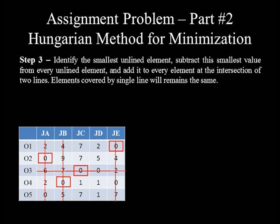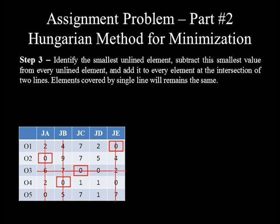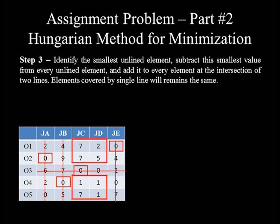Step 3: identify the smallest unlined element, subtract it from every unlined element, and add it to every element at the intersection of two lines. Elements covered by a single line remain unchanged. The elements fall into three groups: 8 elements uncovered, 14 elements covered by a single line, and 3 elements at the intersection of two lines.